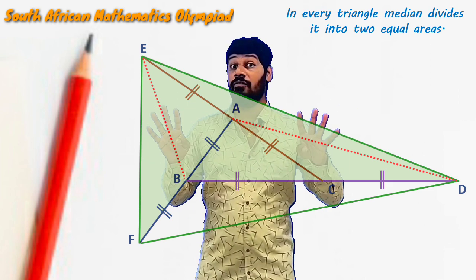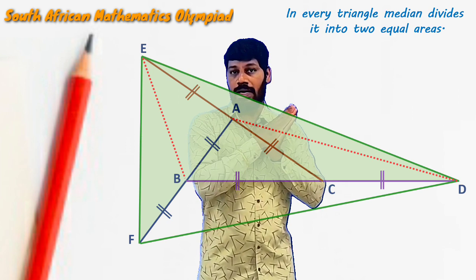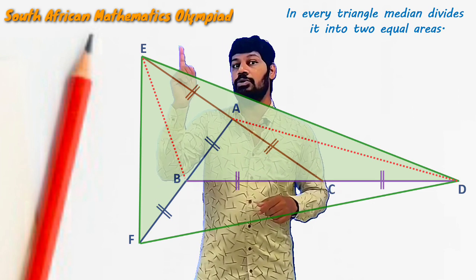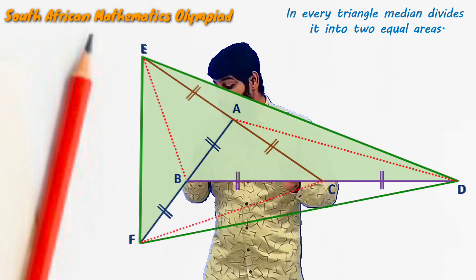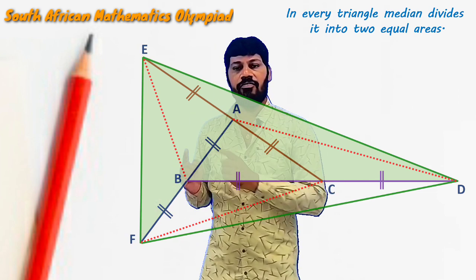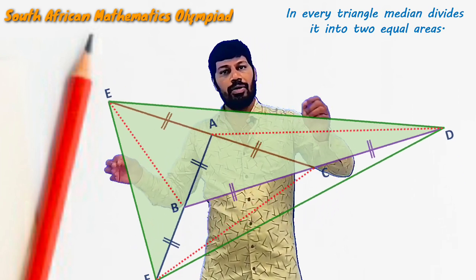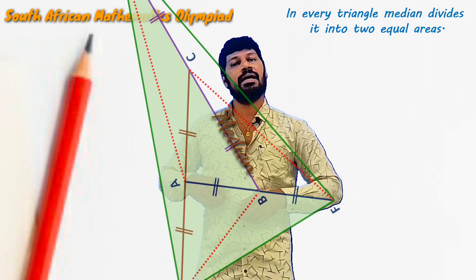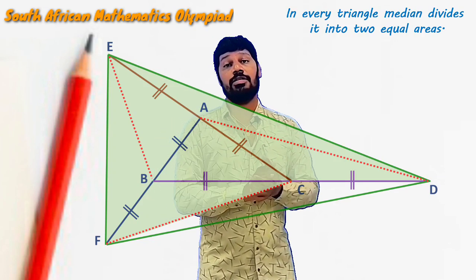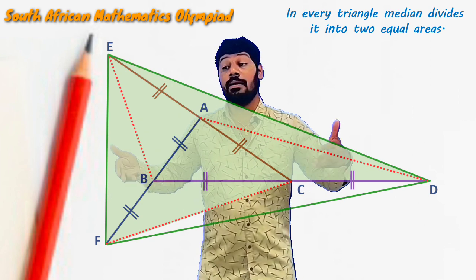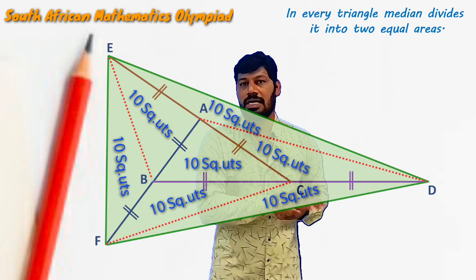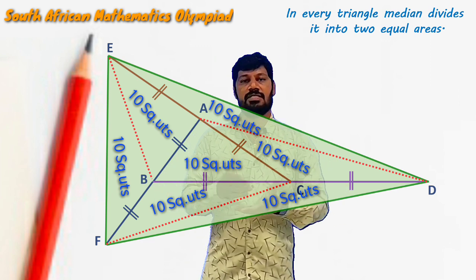So with two constructions we have found four triangles each with area 10 square units. Now the final construction: I am joining C to F. On joining CF, we can see triangle ACF in which B is the midpoint of AF. Rotating the diagram, CB is clearly a median. Triangle ABC has area 10 square units, so the other triangle also has area 10 square units. I think without further explanation you can understand how each remaining triangle also has area 10 square units. Overall, every triangle we found has area equal to 10 square units.